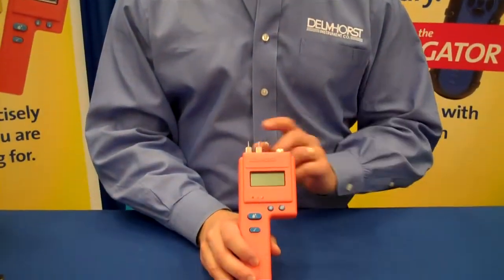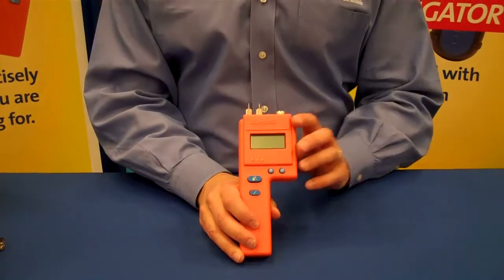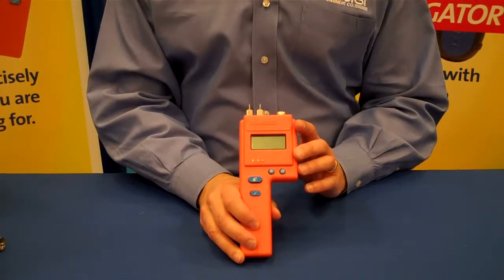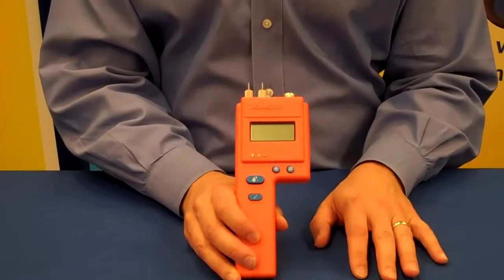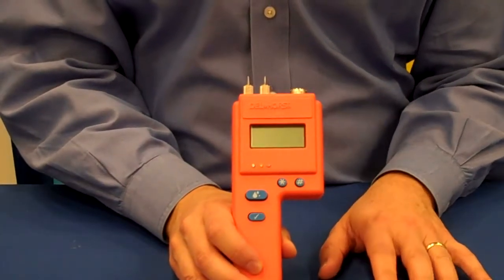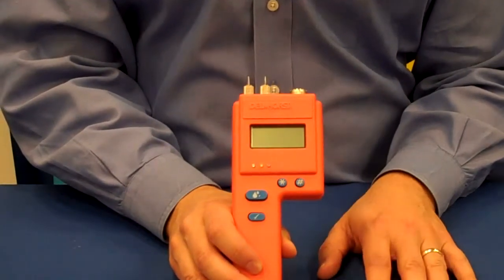The BD2100 is a pin-type moisture meter that allows you to check moisture content on drywall, wood materials, and other building materials such as concrete and insulation.